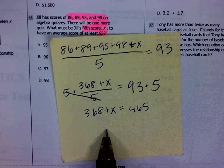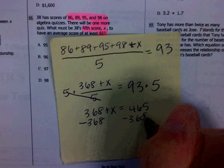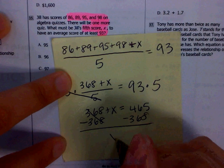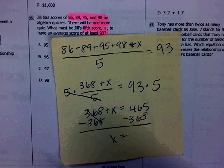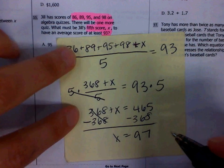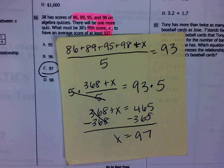This is now a one-step problem. We know how to finish this. We're going to subtract 368 from both sides. 465 minus 368 is 97, which means that Jill needs to get a 97 on her test in order to have an average of 93.